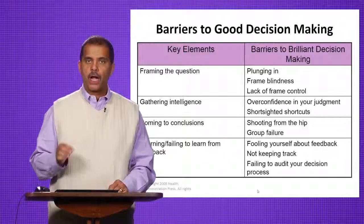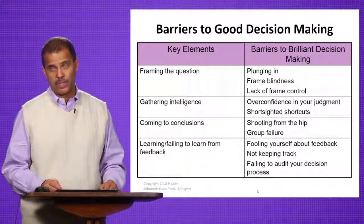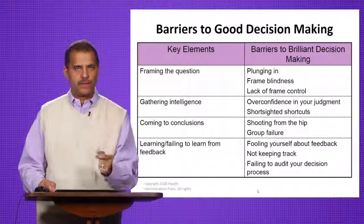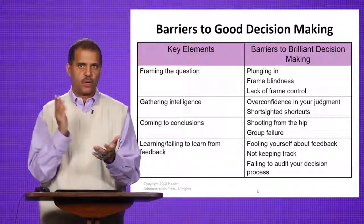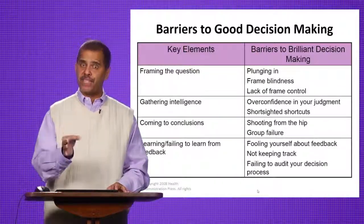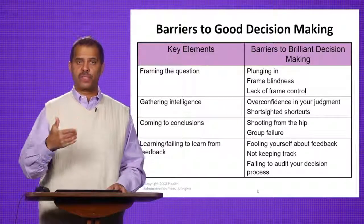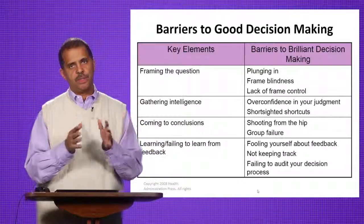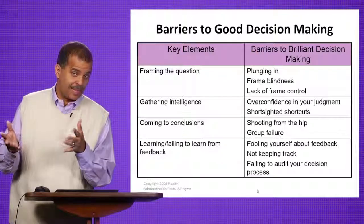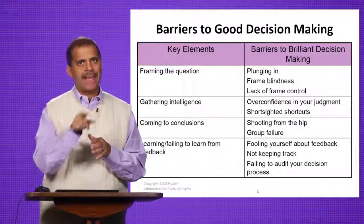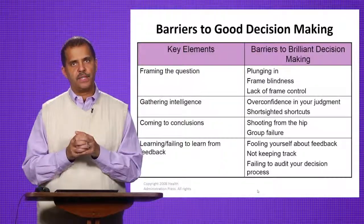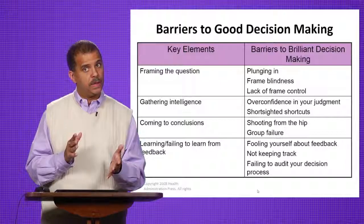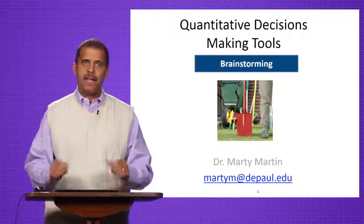The third barrier is coming to conclusions — really, jumping to conclusions prematurely. In this time-pressured world, we want to identify the problem, solve it, and move on. Being time-sensitive and efficient is good, but you don't want to be efficient and not effective. Don't prematurely jump to a solution where you really don't understand the problem. The last barrier is failing to learn from feedback. You go through this structured decision-making process and find out later that the decision wasn't so good. Go back and analyze it so you can improve. The only way you can improve your decision-making is to critically analyze what made that decision good, what made it not so good, and what you can do in the future to make that change.